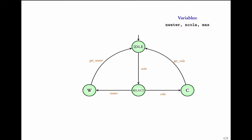How does the code representing this machine change these variables? Each time a water bottle is given out, the value of n_water is decremented by one — so along that transition, n_water becomes n_water minus one. This is an assignment. Similarly, when a cola can is given out, the effect of that transition is to reduce the value of n_cola by one.